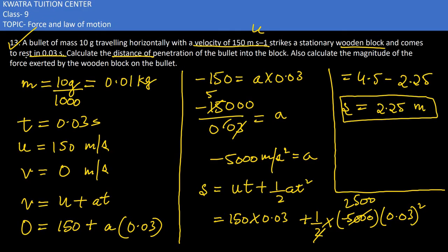Now they are saying to find the force. Force is nothing but M into A. Now we have M, M we have is 0.01, A in this case we have is minus 5000. So removing the decimals, I would put 100 down and 2 zeros would get cancelled with 2 zeros. So you would get minus 50.